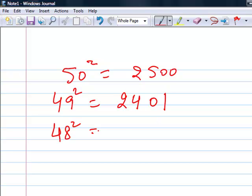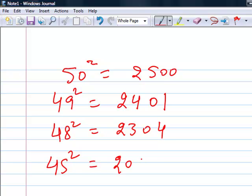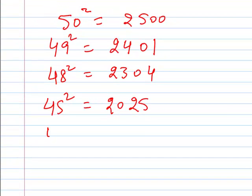48 squared will be: subtract 2 from 25, that is 23, and 2 squared is 4, so 2304. If I have to do 45 squared, I will subtract 5 from 25, that is 20, and take the square of 5 that is 25, that will be 2025. 41 squared will be 25 minus 9, that will be 16, and 9 squared is 81, so 1681.